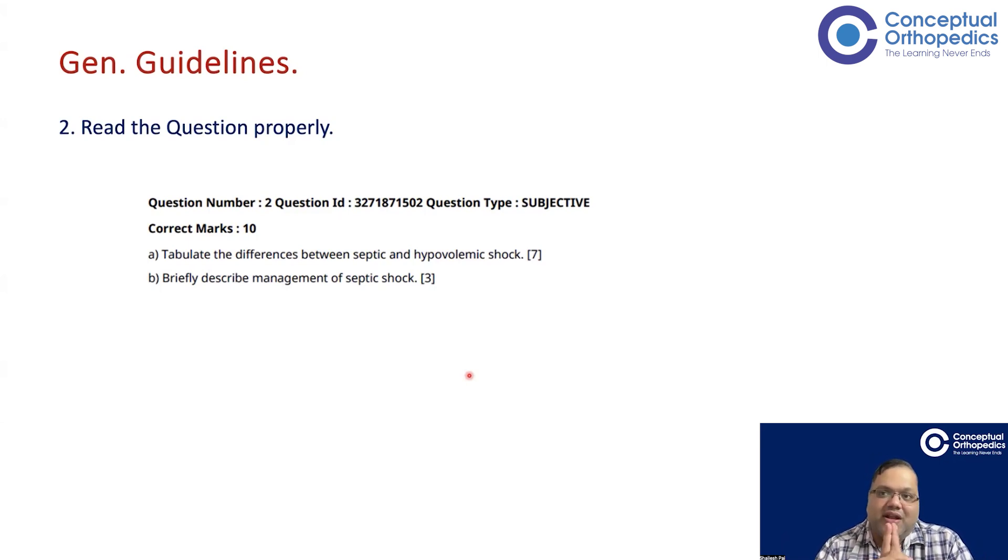When you write brilliantly, the examiner may actually get irritated because it is not asked. What is asked is tabulate the difference between septic and hypovolemic shock. Now, the answer to this has to be a table. If you write one paragraph for septic shock, one paragraph for hypovolemic shock to tell the difference, again, the examiner might not consider the answer.